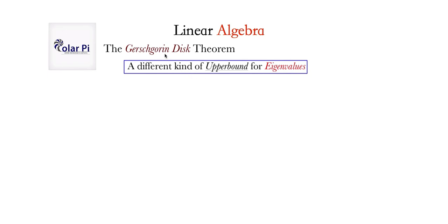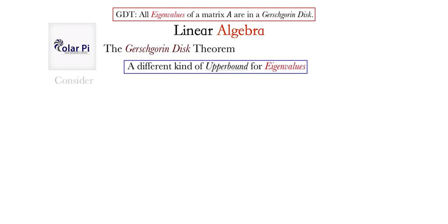Now here, the Gershgorin disk theorem is going to allow us to have a geometric upper bound, and you will see exactly what I mean by that. But let's very clearly state it. The Gershgorin disk theorem says all eigenvalues of a matrix A are in a Gershgorin disk, and we will define exactly what we mean by a Gershgorin disk. I think you'll really appreciate them. Now for our example, let's demonstrate this by example - I think it's the best approach to get a feel for this Gershgorin disk theorem.